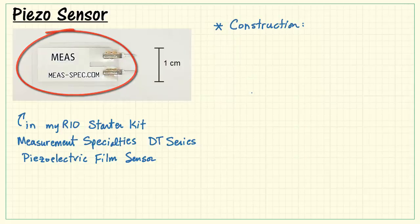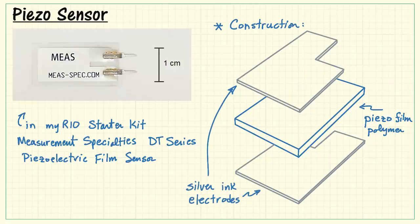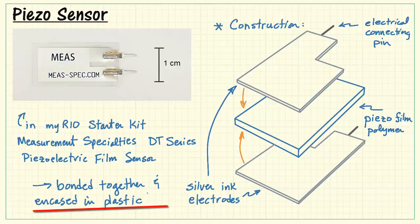Let's take a look at the construction of this device. We begin with a piece of piezo film polymer, placing a silver ink electrode on either side, and then connecting an electrical pin to each electrode. Then the whole works is bonded together and encased in plastic. This is actually a fairly thin device, and it's also flexible.